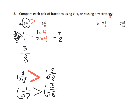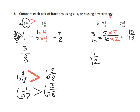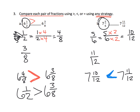Let's practice the standard algorithm again with this problem. Since the whole numbers are the same, we just compare the fractions: five-sixths and eleven-twelfths. I can see we can easily turn six into 12 by multiplying by two. So I multiply five and six each by two to get ten-twelfths. Instead of saying seven and five-sixths, we say seven and ten-twelfths. Now we have common denominators and can easily see that seven and eleven-twelfths is larger than seven and ten-twelfths, so seven and five-sixths is less than seven and eleven-twelfths.